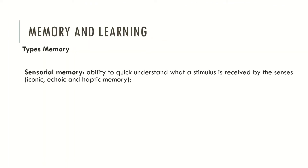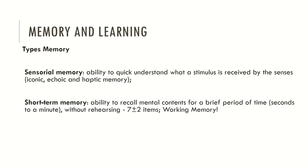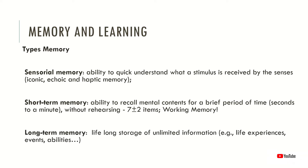There are different types of memory. Sensorial memory, which is the ability to quickly understand what stimuli are received by the senses — typically described as iconic, echoic and haptic memory. Short-term memory, the ability to recall mental contents for a brief period of time, within seconds to a minute and without rehearsing. Broadbent found that our short-term memory typically holds seven plus or minus two items. Some authors describe short-term memory as working memory, which may be viewed as an executive function. Long-term memory is described as the lifelong storage of unlimited information, typically regarding life experiences, events, abilities and so forth.